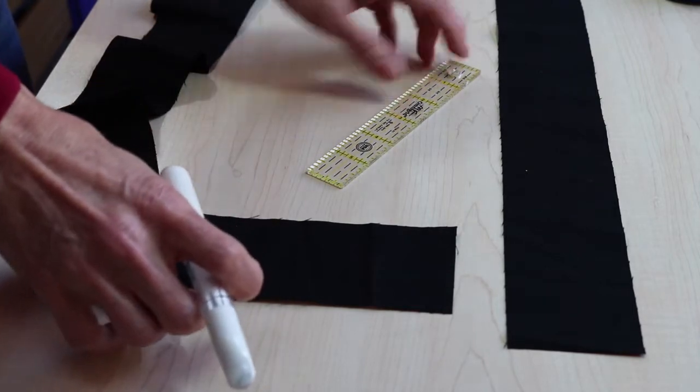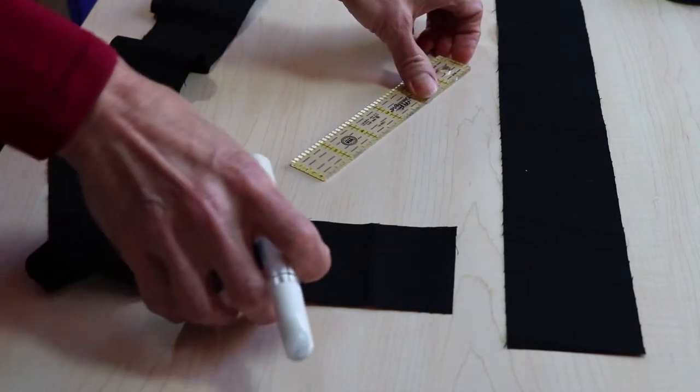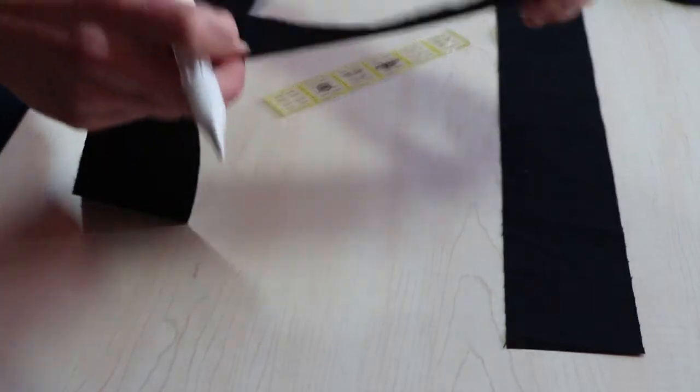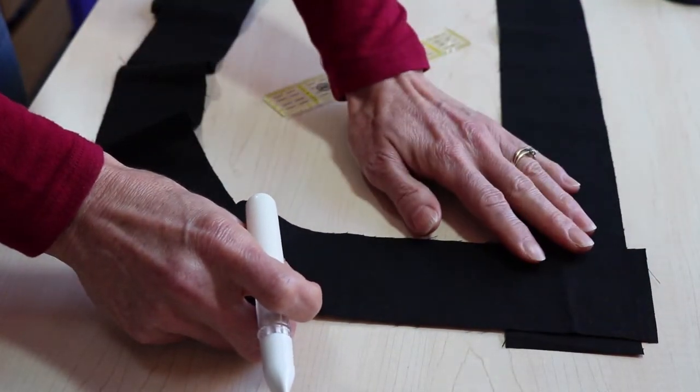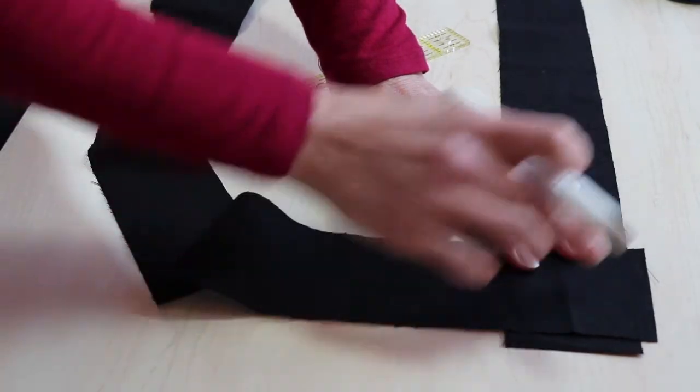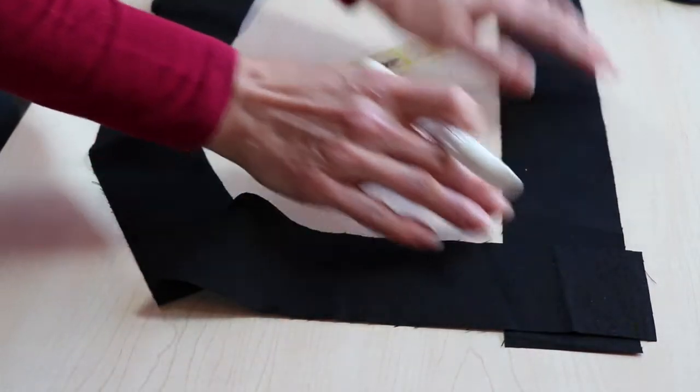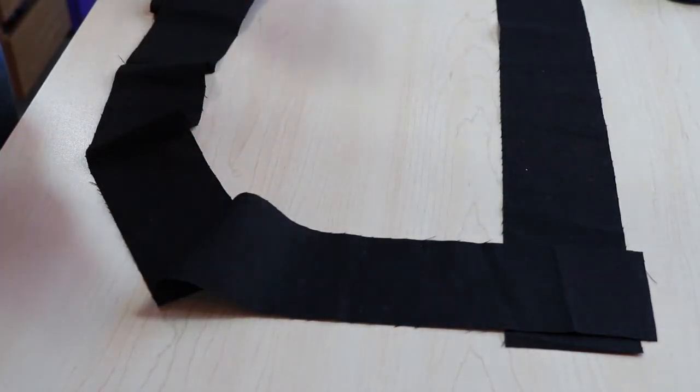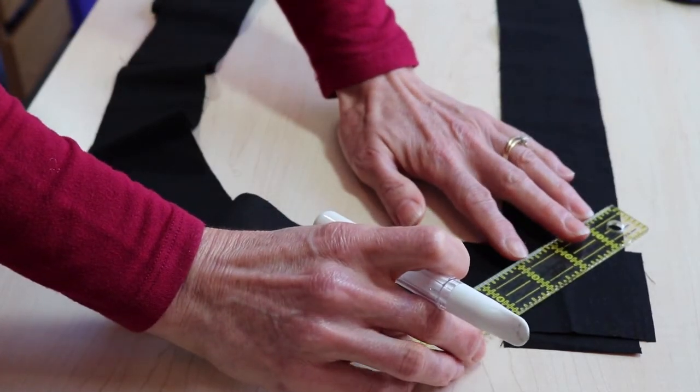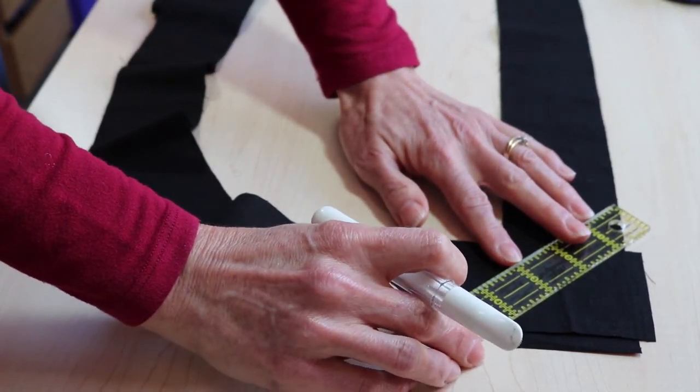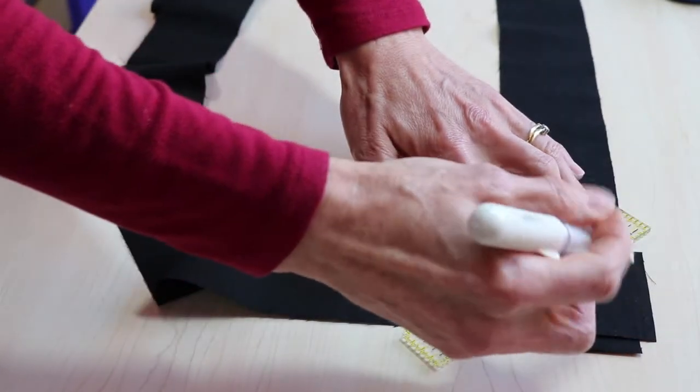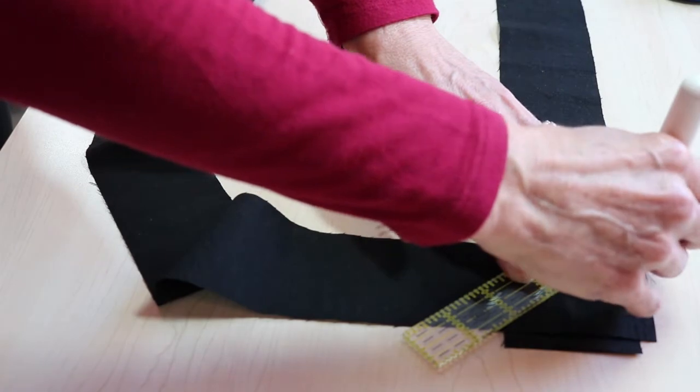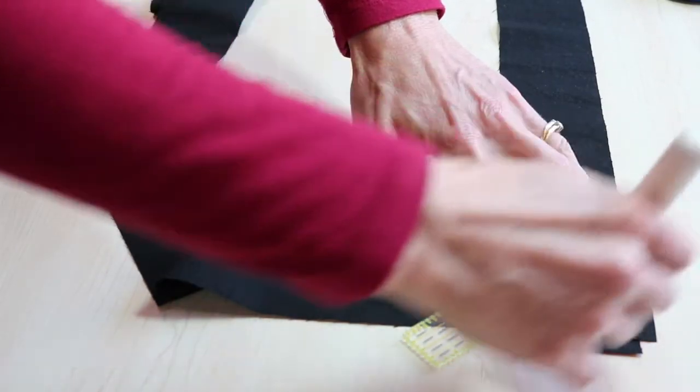We're working with our two and a half inch strips. We're going to place our right sides together and we're going to leave about a quarter of an inch tail sticking out. I'm going to grab my ruler and I am going to use a chalk line. You can also use a pencil. It's entirely up to you and I'm going to draw a line from corner to corner.